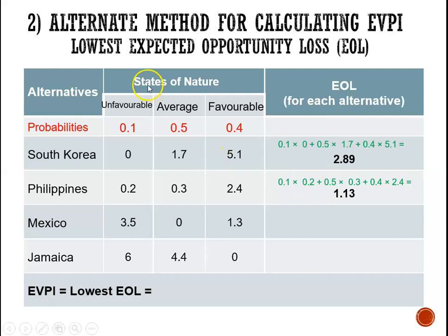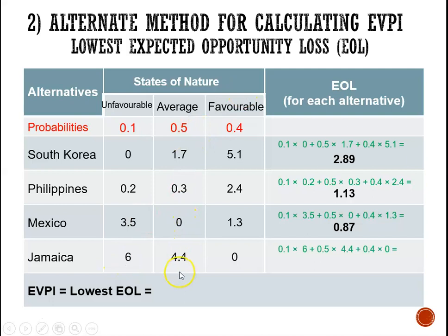For Mexico, we have 0.1 multiplied by 3.5, plus 0.5 multiplied by 0, plus 0.4 multiplied by 1.3, and that gives us 0.87 million. And last but not least, for Jamaica, we have 0.1 multiplied by 6, plus 0.5 multiplied by 4.4, plus 0.4 multiplied by 0, which gives 2.8 million. So of these expected regrets, the lowest one is 0.87 million. So our EVPI is equal to the lowest expected opportunity loss, which in this case is 0.87 million dollars — and you'll see that it agrees with what we calculated using the previous method.